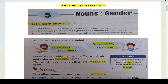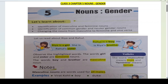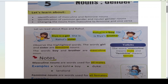Now let us remember this: the word 'masculine' starts with the alphabet M, that means male, and 'feminine' starts with the alphabet F, so we will remember that feminine goes with F and female goes with F. Now, notes: masculine nouns are words used for all males — sare males ke liye hum masculine nouns use karte hain.